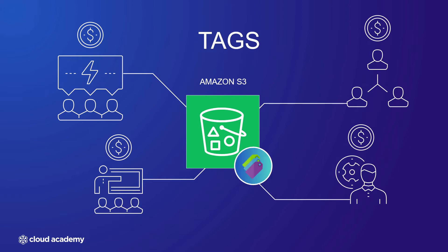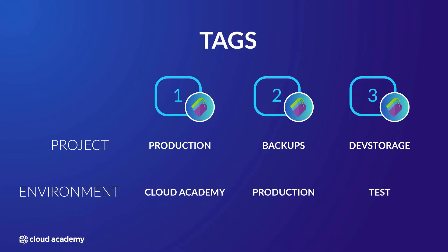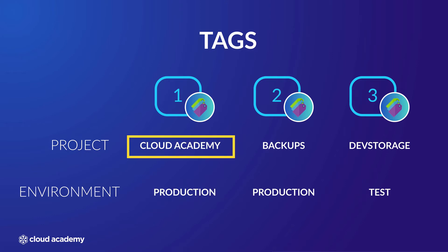Using bucket tags known as S3 cost allocation tags, you can assign key-value pairs at the bucket level to help with categorization. For example, suppose you had three different buckets, each with two key-value pairs: project and environment. Using these tags, we can see that each bucket belongs to a different project, and that two of them are considered production and another is test, based on the environment key.